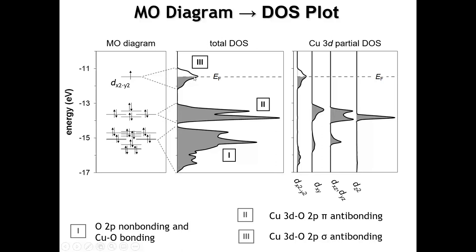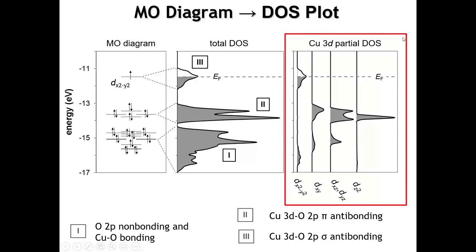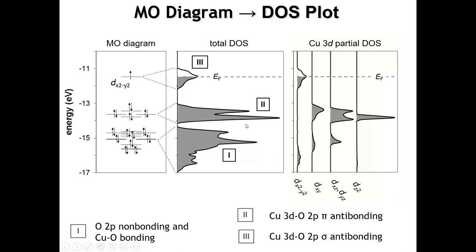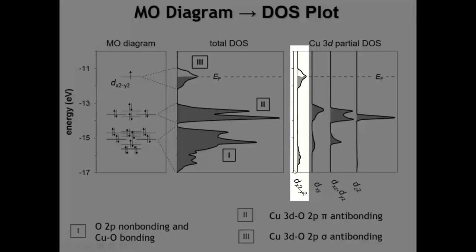This sigma-star band is only half-filled because the dx²-y² orbital has only one electron. Over on the far right is what's called a partial density of states diagram, a useful tool to see where certain orbitals are contributing to the electronic structure. The dx²-y² makes some contribution at the bottom — those are the bonding interactions with the oxygens — and at the top we see the antibonding interactions. The relatively large splitting between these two is because this is the d orbital with the strongest bonding interactions with oxygen.